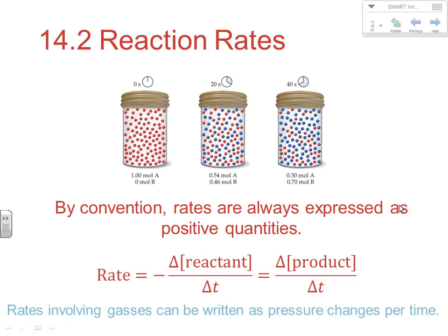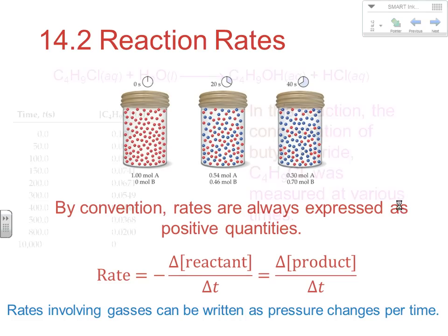In some situations we have gases involved in the reaction, and the number of moles of gas particles — which is related to concentration — is directly proportional to the pressure those gas particles exert. So as we're changing the number of particles, we're changing the concentration, and we'd also be changing the pressure in a proportional amount. Sometimes you'll see rates of reactions involving gases written as pressure changes per given amount of time, such as how many torr or millimeters of mercury or atmospheres per second the pressure is changing.